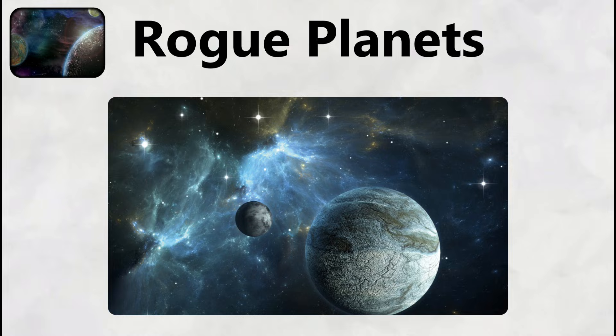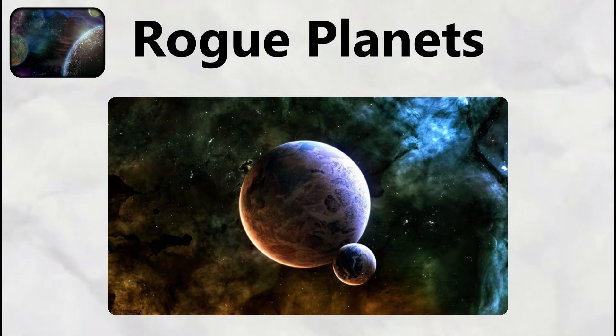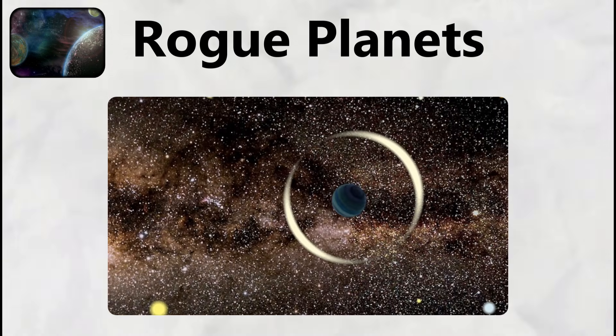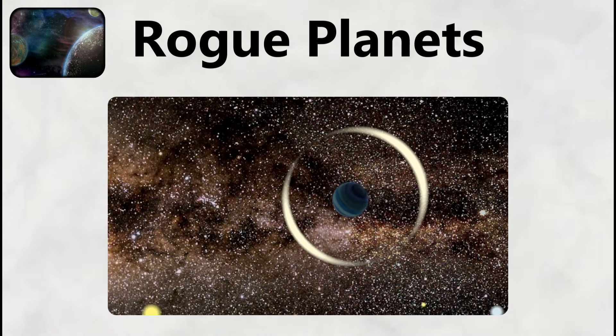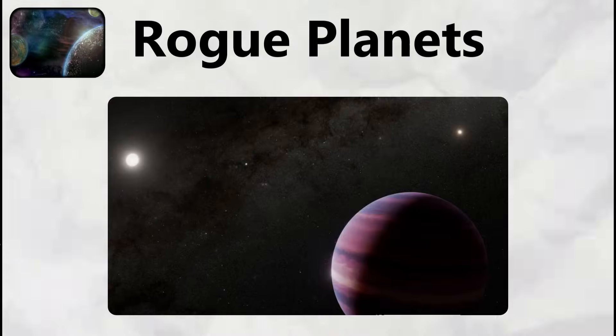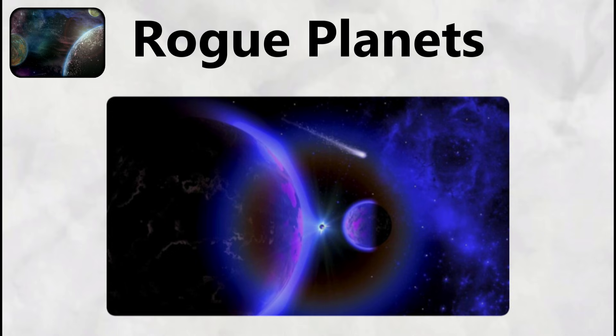Rogue Planets. Rogue planets drift through interstellar space without any parent star, creating some of the most isolated and frightening objects in the galaxy. These worlds were violently ejected from their original solar systems through gravitational interactions with larger planets, close encounters with passing stars, or the explosive death of their host star in a supernova. Without a sun's warmth, rogue planets exist in perpetual darkness.